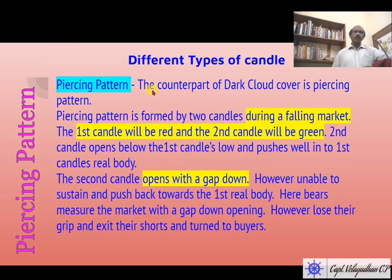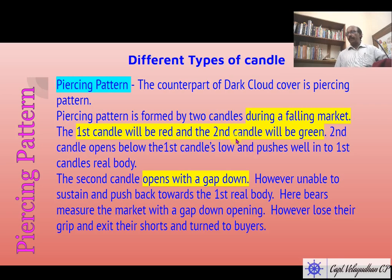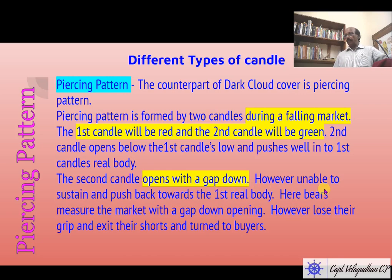If the dark cloud cover pattern is formed after a downtrend, the candle is called a piercing pattern. The counterpart of dark cloud cover is the piercing pattern. It is formed by two candles during a falling market. The first candle will be red and the second candle will be green. The second candle opens below the first candle's low — gap down — and pushes well into the first candle's real body. The second candle opens with a gap down; however, the bears measure the market with the gap down opening.